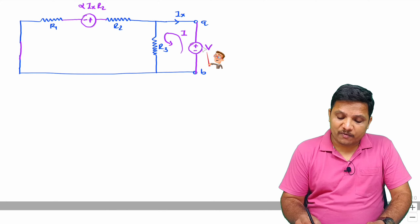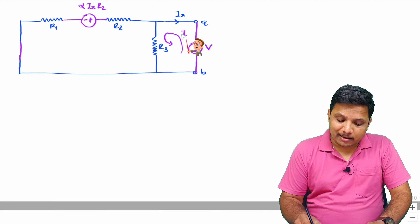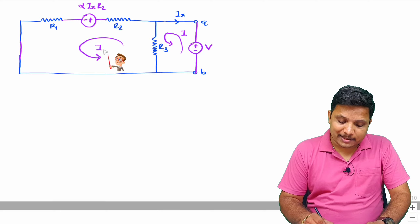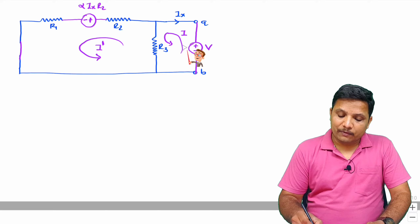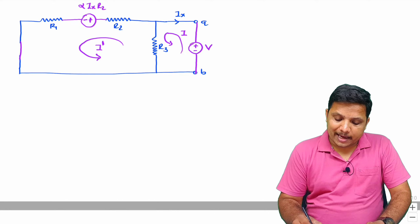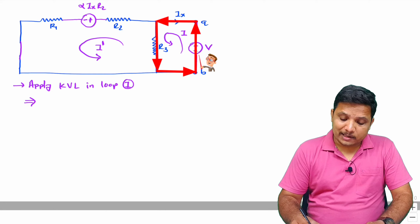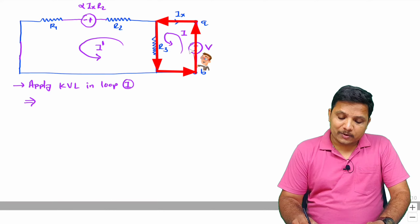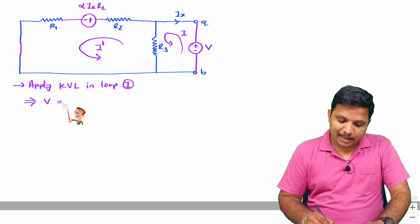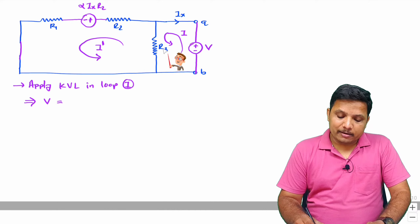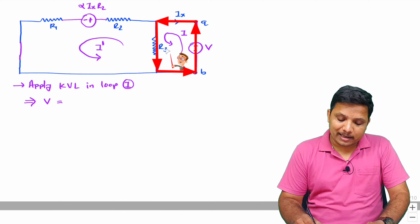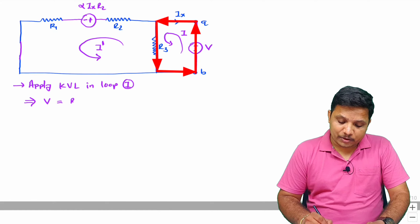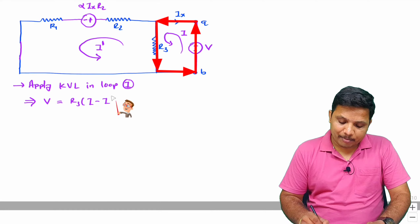To calculate V by I, I consider two loops — both in the counterclockwise direction. In the second loop, let the current be I'. Applying KVL in loop one: the only voltage source in this loop has value V, going from minus to plus, so it contributes plus V. The voltage drop across R3 is R3 times the net current due to loop I, which is (I − I'). So: V = R3 · (I − I').